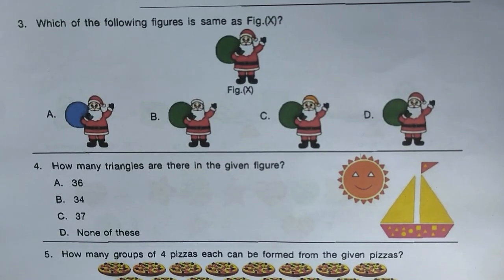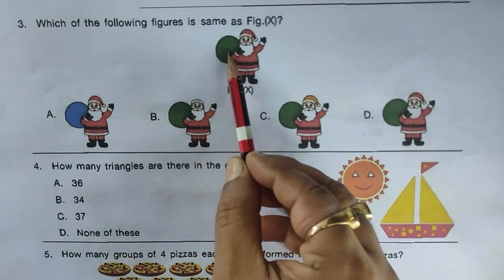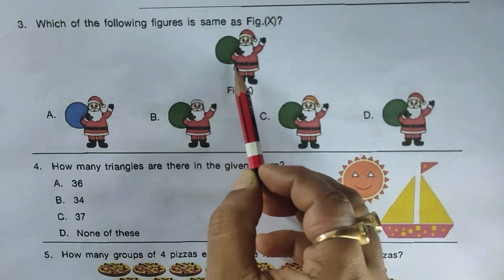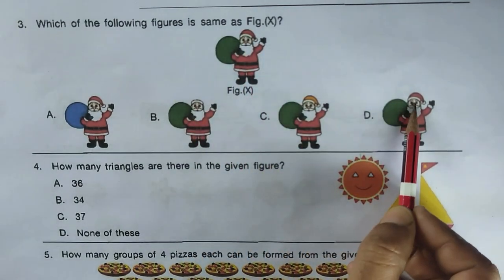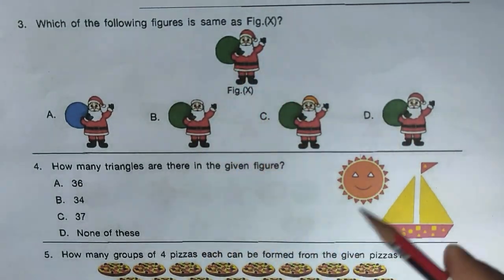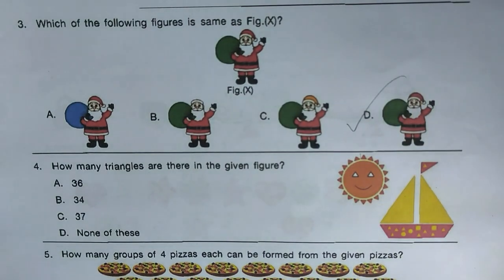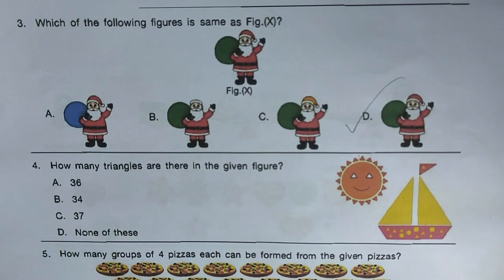Next question: which of the following figures is the same as figure X? Looking at figure X, the green element is in a specific position and the red hat is only in one option. This matches option D, which is the right answer.